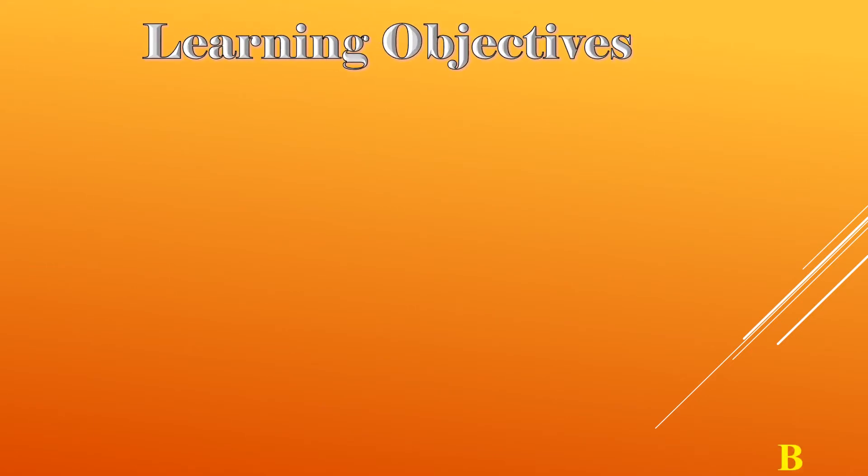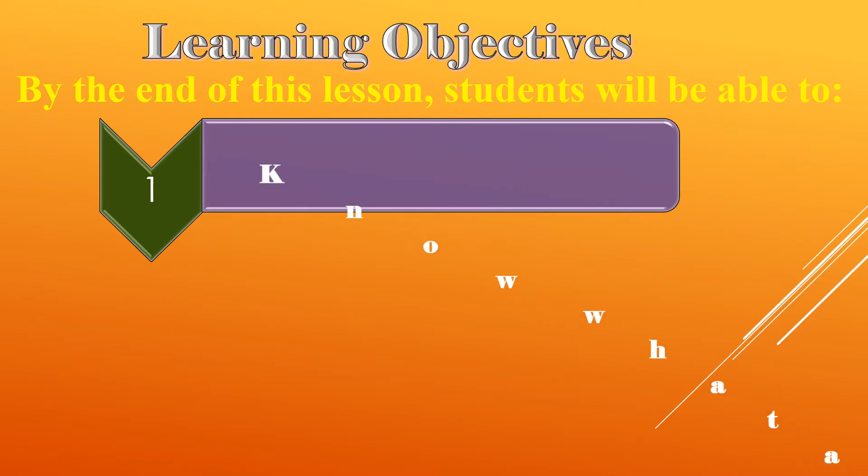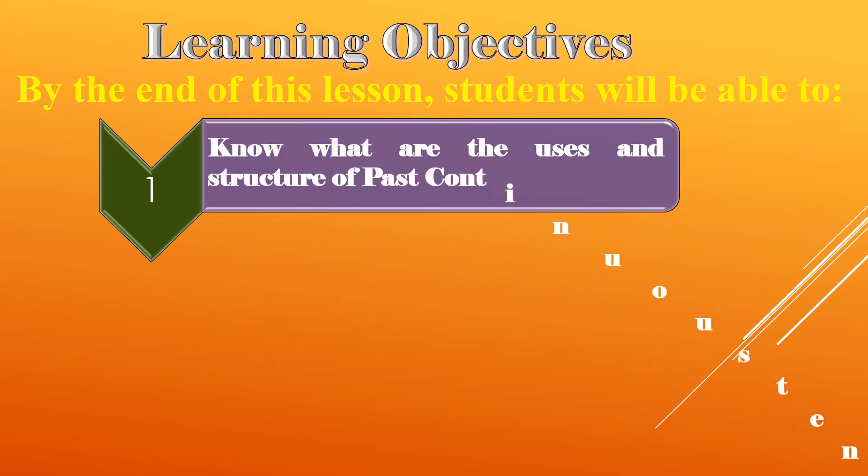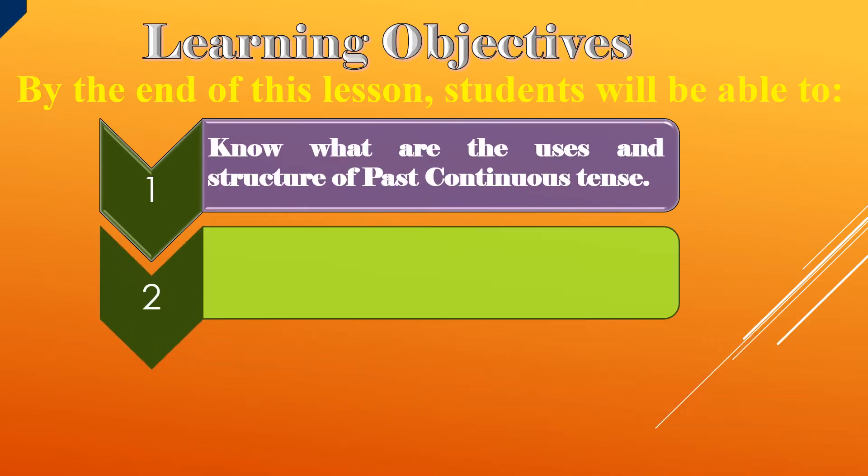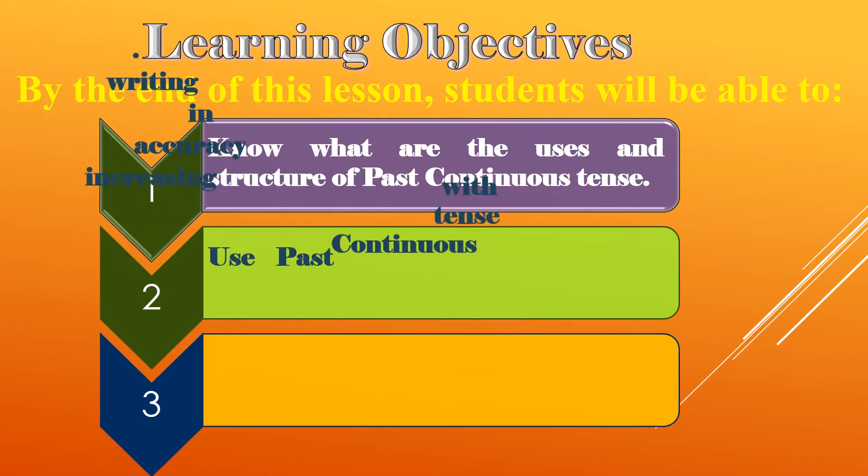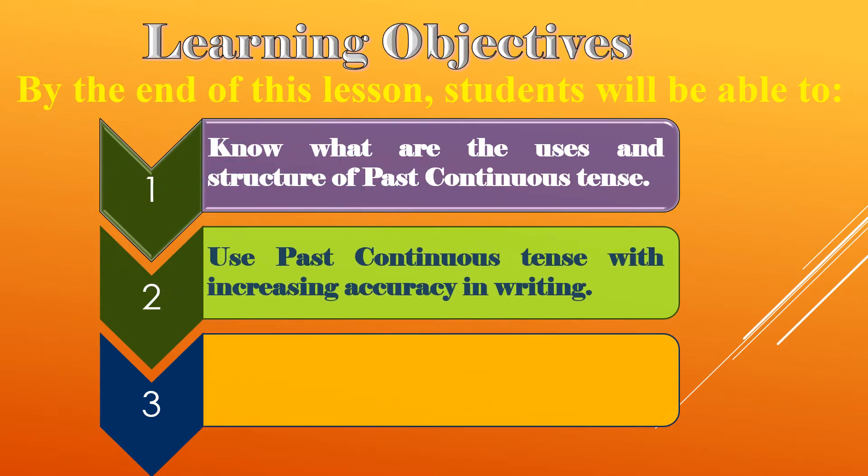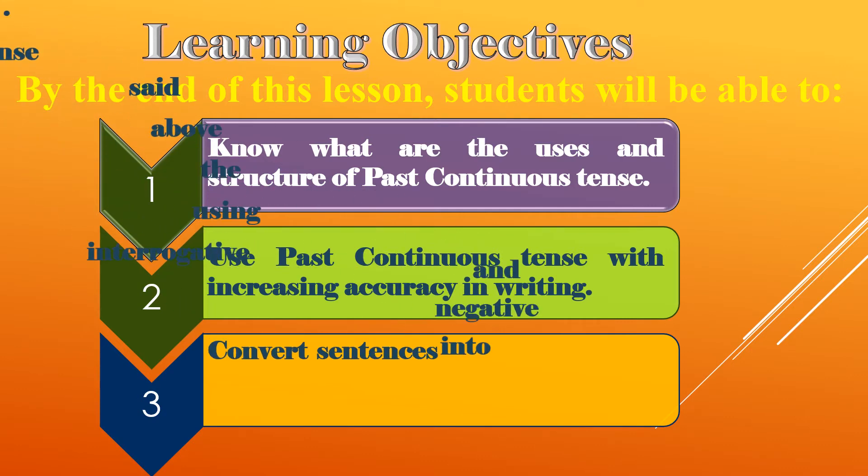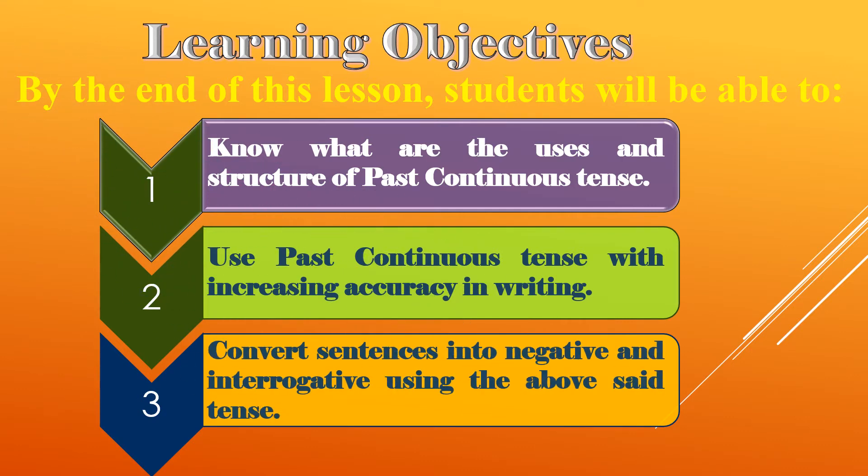Let's have a look at the learning objectives of our today's lesson. By the end of this lesson, you'll be able to: number one, know what are the uses and structure of past continuous tense; number two, use past continuous tense with increasing accuracy in writing; and number three, convert sentences into negative and interrogative using the above said tense.